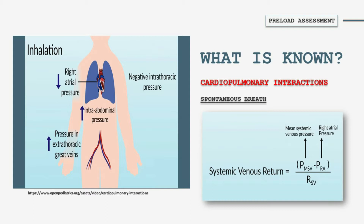During spontaneous breathing, the pleural and right atrial pressure falls because the intrathoracic pressure is becoming negative, and therefore there is less pressure in the right atrium, and it is easier for blood to return. Additionally, the intra-abdominal pressure and pressure in the extrathoracic great veins is going to rise. So the combined benefit of decreasing the right atrial pressure with negative intrathoracic pressure, and the increased abdominal pressure, facilitate the venous return to the heart during spontaneous breathing.